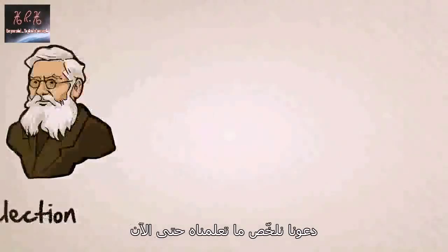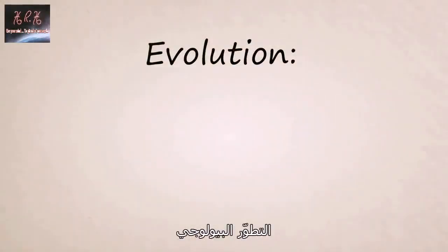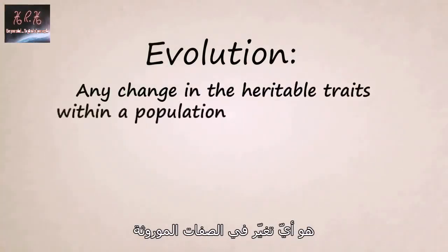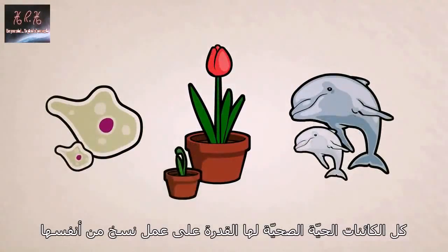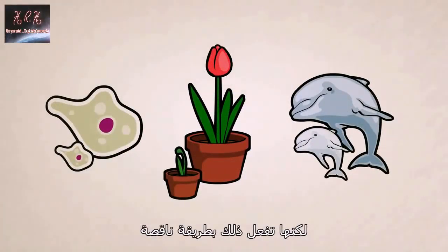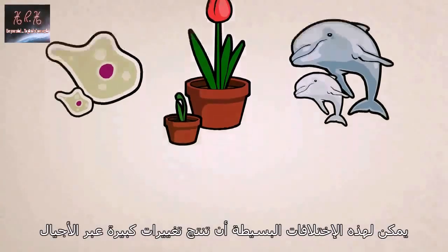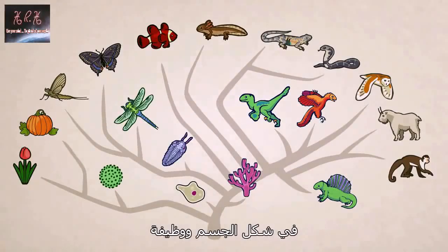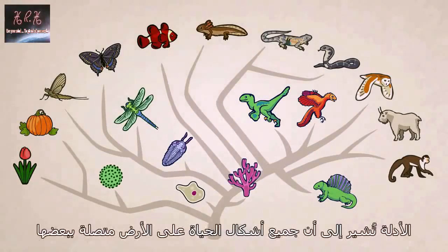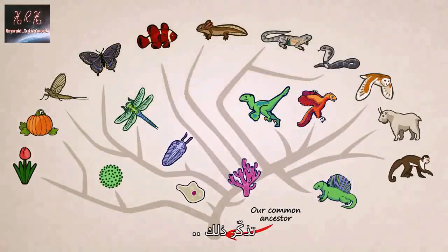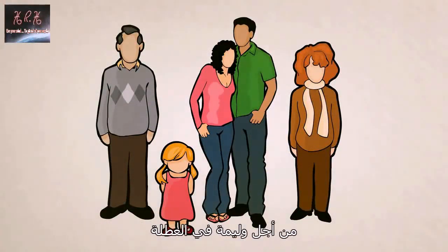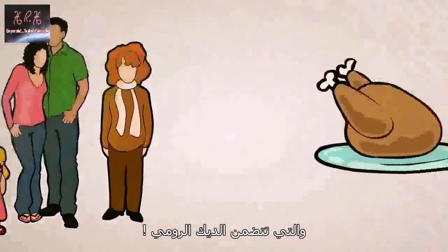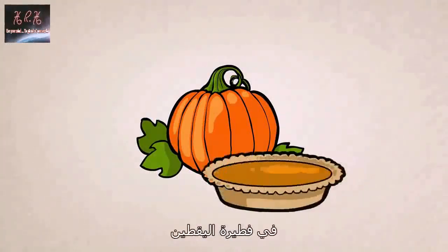But before you move on, let's recap what we've learned so far. Biological evolution is any change in the heritable traits within a population across generations. All healthy living things can make copies of themselves, but they do so imperfectly. Small variations can add up over generations to create dramatic differences in the body form and function of living creatures. Evidence overwhelmingly suggests that all life on Earth is related — so remember, next time you invite family and friends over for a holiday feast, you're actually just inviting family. That includes the turkey and the pumpkin in the pumpkin pie.